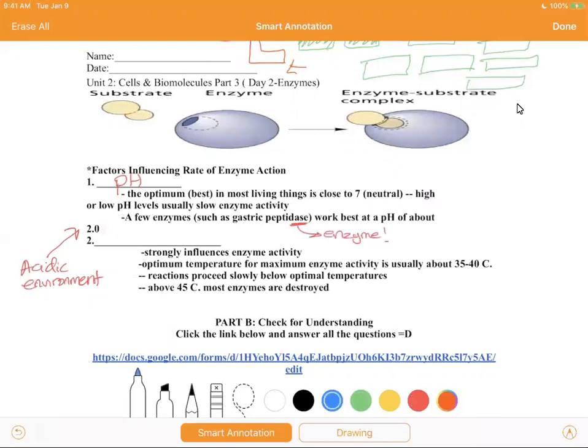The second one is temperature. Strongly influences enzyme activity. Optimum temperature for maximum enzyme activity is usually about 35 to 40 degrees Celsius. Reactions proceed slowly below optimal temperatures. Above 45 degrees, most enzymes are destroyed. Another word that we use for destroyed enzymes is denatured, which we'll talk about tomorrow. Denatured just means that they don't work anymore.